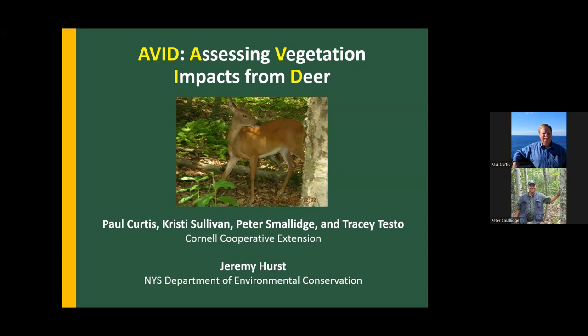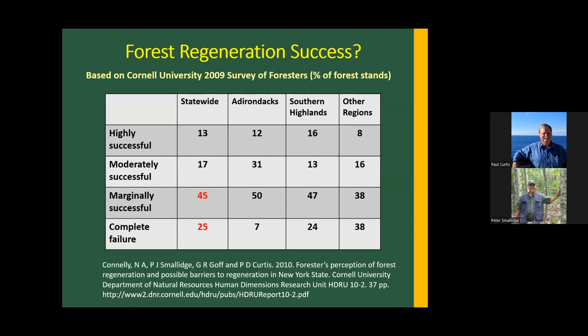What I'd like to do is, first of all, talk a little bit about background — why did we get involved in assessing vegetation impacts from deer? Many of you from New York have seen these data before. Back in 2009, Peter, myself, Gary Goff, and others worked with Nancy Connolly from our Human Dimensions Research Unit at Cornell and did a statewide survey of professional foresters in New York State. We asked them to assess stands they visited during the past year and whether or not regeneration was successful.